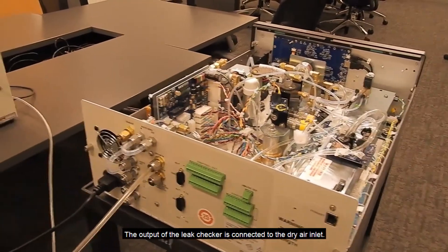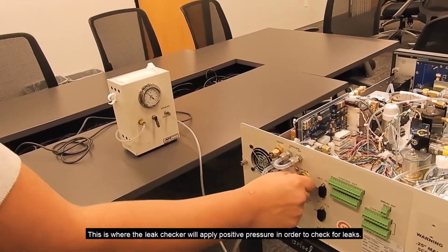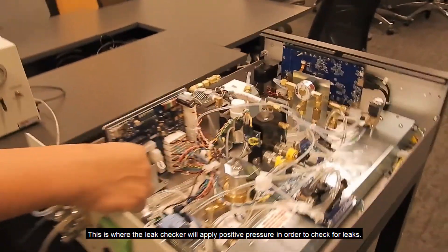The output of the leak checker is connected to the dry air inlet. This is where the leak checker will apply positive pressure in order to check for leaks.